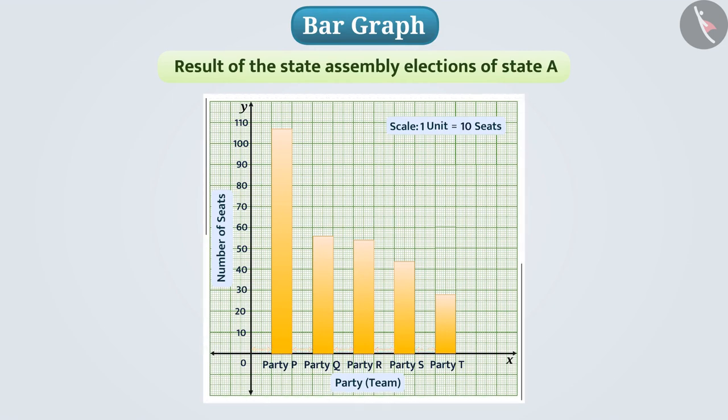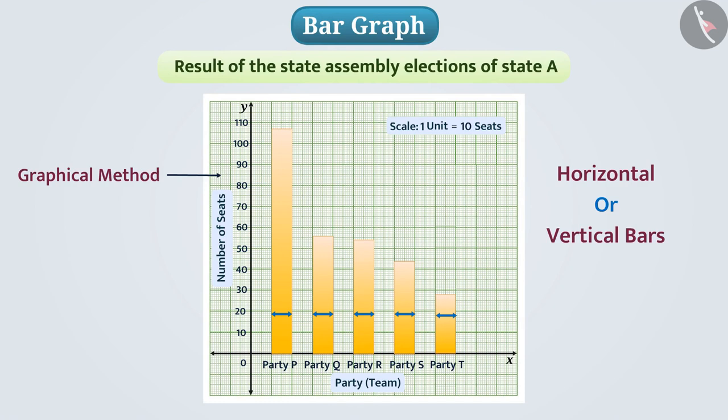In the bar graph the data is represented as the length of the bar. Thus the graphical method of representing the data in which data is represented by horizontal or vertical bars of equal width at the same distance is called bar graph.